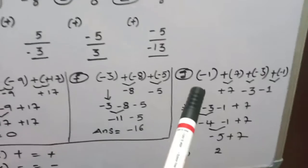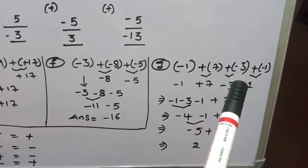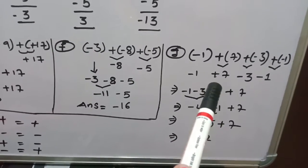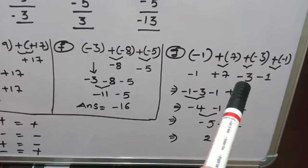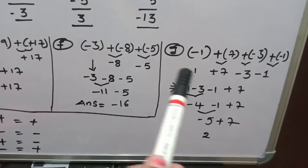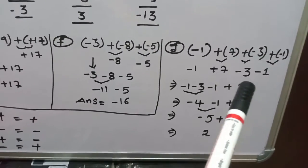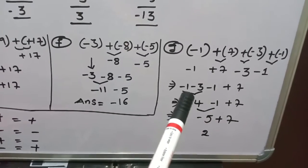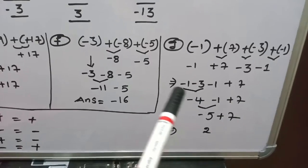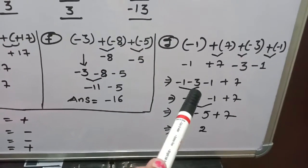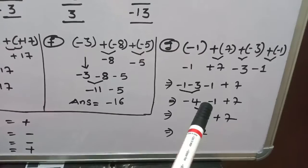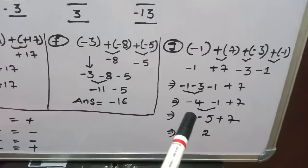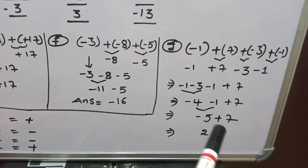Coming to example G: minus 1 plus of 7, plus of minus 3, plus of minus 1. Here plus into plus means plus 7, plus into minus means minus 3, and plus into minus means minus 1. So we have minus 1 plus 7 minus 3 minus 1. I write all negative numbers together: minus 3 minus 1 minus 1 plus 7. Adding minus 3 and minus 1 gives minus 4. Then minus 4 minus 1: both are negative, so 4 plus 1 is 5, giving minus 5.